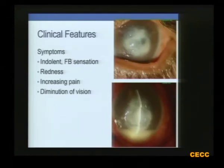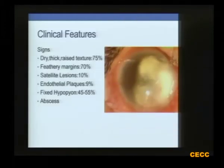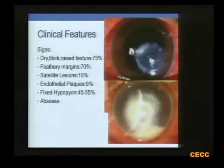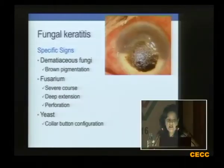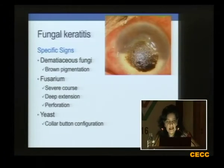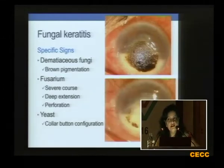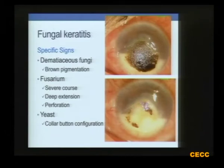The symptoms we are all aware of: the indolent symptoms of foreign body sensation, redness, pain, and diminution of vision, and the classical features of dry, thick, raised texture of the ulcer with feathery margins, satellite lesions, endothelial plaques, and a fixed hypopyon. Sometimes there can be specific signs such as dematiaceous keratitis, which looks like an iris prolapse but is actually infection due to brown pigmentation from dematiaceous fungi such as Curvularia. When you treat it, the pigmentation disappears. You can also have Fusarium with a severe course, deep extension, and perforation with a collar-button configuration.